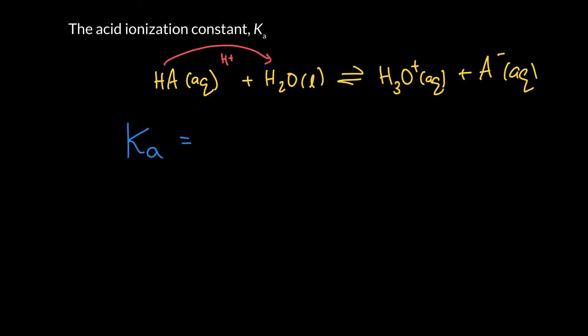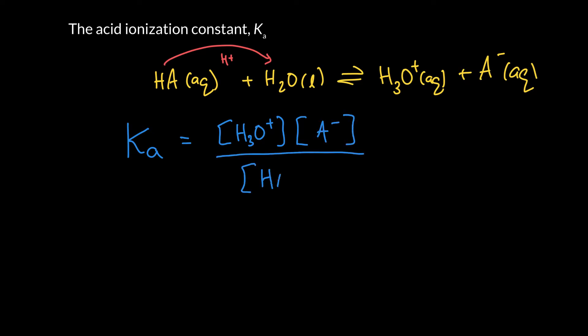Ka is the concentration of products over reactants at equilibrium. So we have the hydronium concentration times the concentration of the conjugate base, divided by the concentration of the original acid. Water is a pure liquid, and we don't include pure solids or pure liquids in equilibrium constant expressions, so we can essentially write an effective concentration of 1 — or really just ignore it.